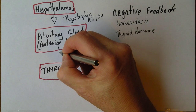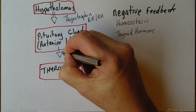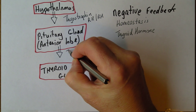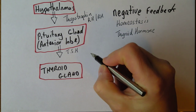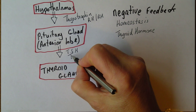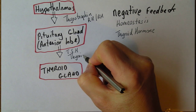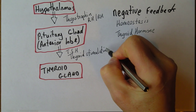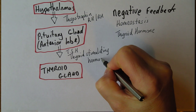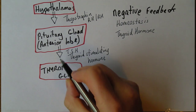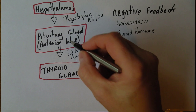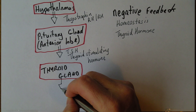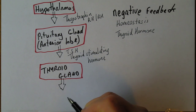This thyrotrophin releasing hormone will stimulate the pituitary gland, and when the pituitary gland is stimulated it will release TSH — thyroid stimulating hormone. The thyroid stimulating hormone will then stimulate the thyroid gland, and as a result the thyroid gland will produce more thyroid hormone.